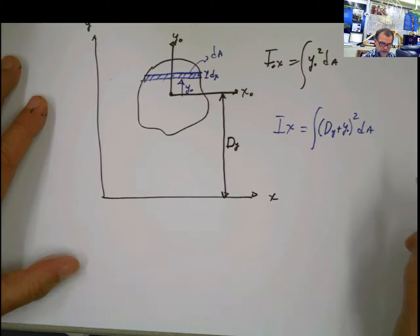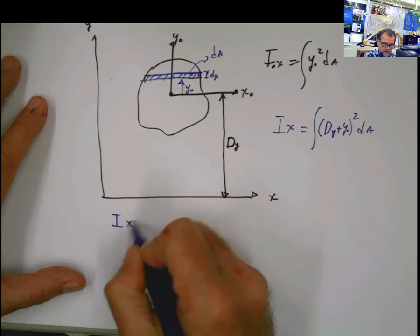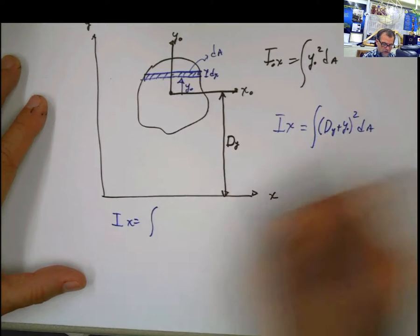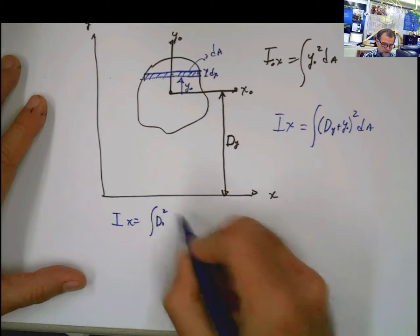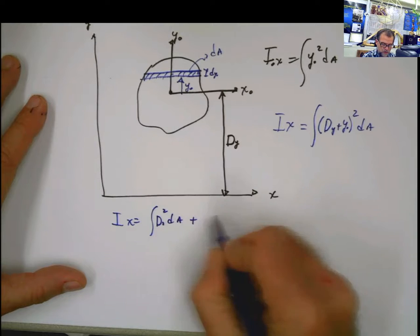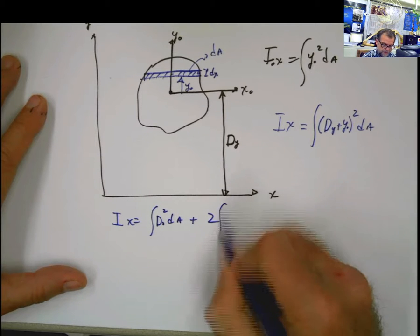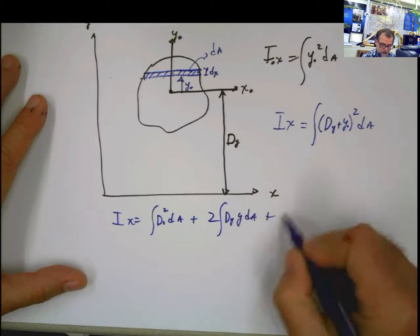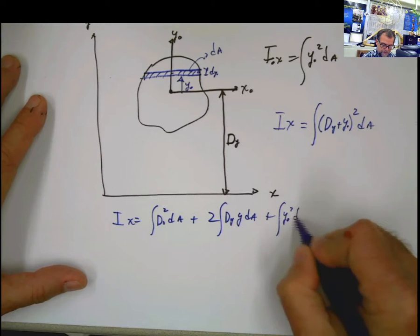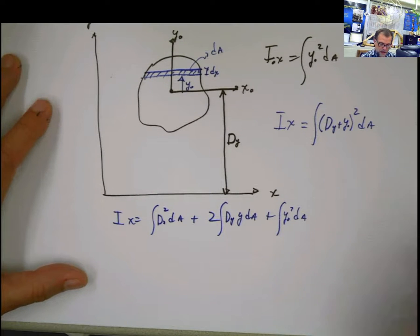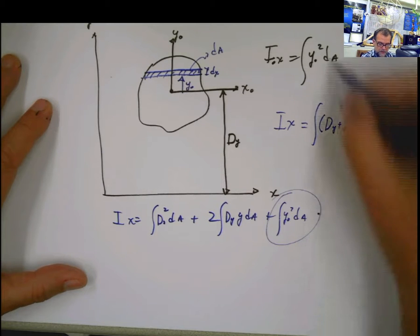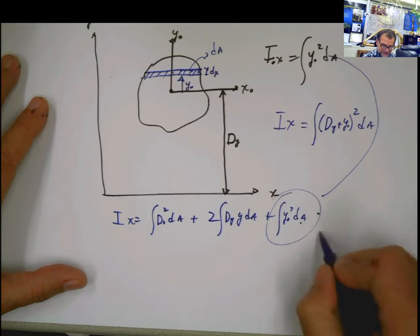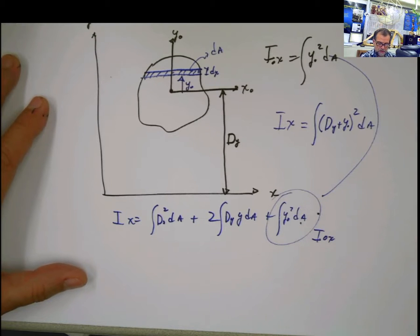Nothing changes. So my moment of inertia is going to be — I'm going to solve for this — it's going to be the integral of the square of the first one dA, plus two times the first and the second, plus the square of the second one. Now, if you look closely at this term, this term is no other thing than the moment of inertia with respect to x. So I can say that this value is the centroidal moment of inertia with respect to x.